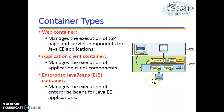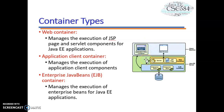Let's look at container types. In Java EE there are three container types. The first is the web container, which manages the execution of JSP pages and servlet components for a Java EE application. The second is the application client container, which manages the execution of application client components to the Java EE server — including the web container and EJB container. The EJB container manages the execution of enterprise beans for the Java EE application.